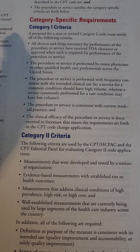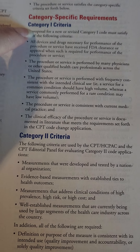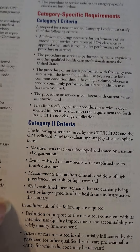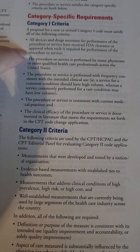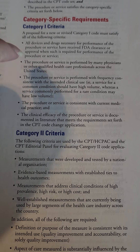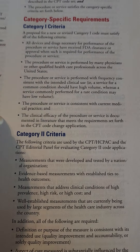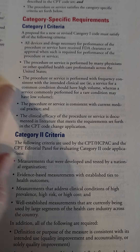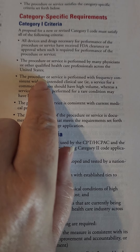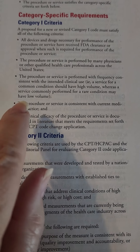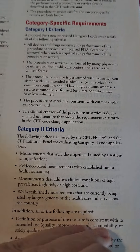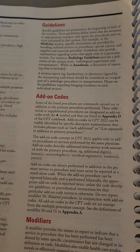The next thing you might get asked on the CPC exam is a question about category one codes or category two codes. Be sure you know where these bullet points are. When you're asked which one is or isn't part of category one or category two, you'll be able to turn to this page and find the answer that is or is not on that list.